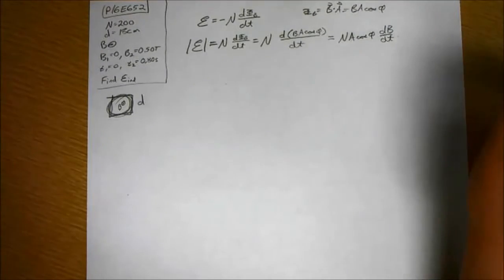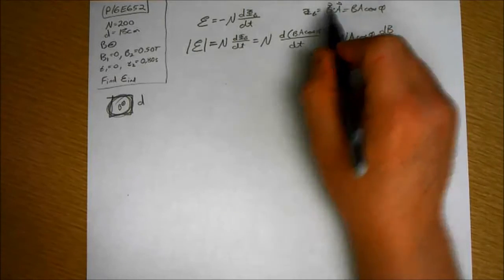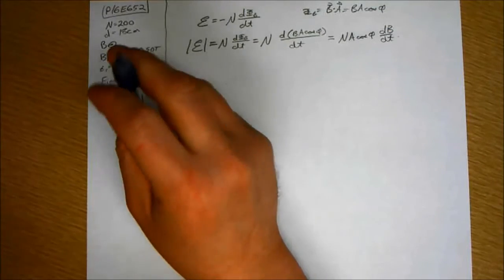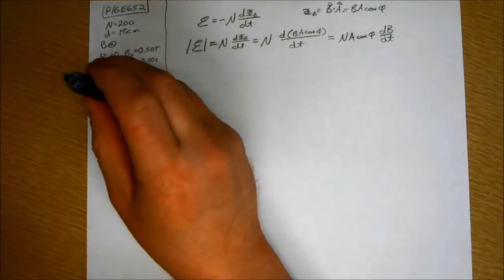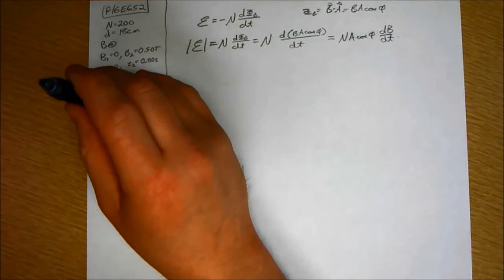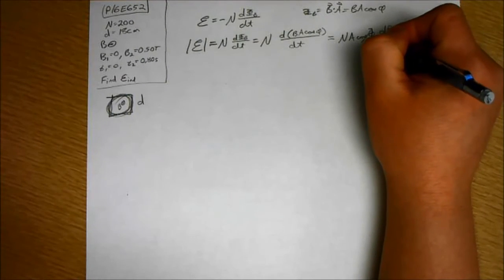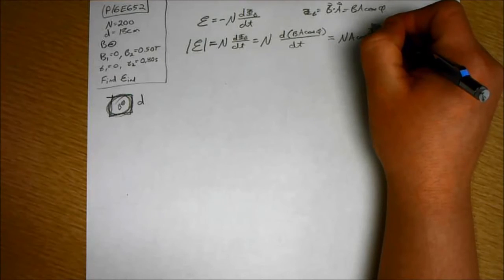Also, let's get one thing out of the way. What's the angle phi between B and A? Well, if B is out of the plane, the area normal vector, remember it's perpendicular to the plane of the loop. So it's out of the field as well. So that's going to be zero degrees. So cosine of zero degrees is one.